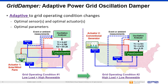Power grid operating conditions change due to variations in load demand and power generation. These variations are common in daily grid operation and become more frequent because of the intermittent nature of renewable energy sources. Grid Damper automatically monitors oscillations with real-time measurements and updates its choice of sensors and actuator equipment for optimal observability and controllability. The figure shows an example in the Western Interconnection where Grid Damper automatically changed sensors from AB to CD as the operating condition changed.